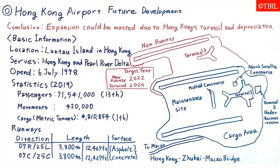Near this airport is the world's largest bridge, the Hong Kong–Zhuhai–Macao Bridge. It's a great location. However, the success of this development plan depends on the political situation in Hong Kong. What do you think about the future development of this airport?